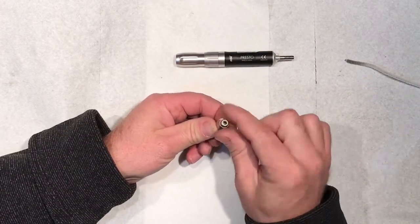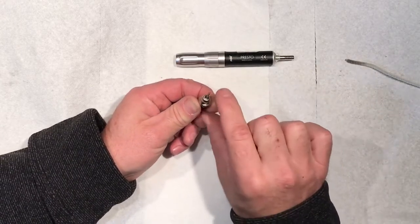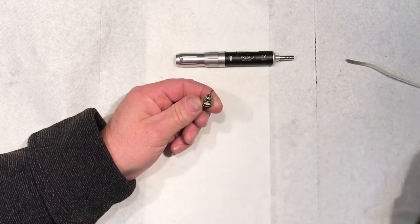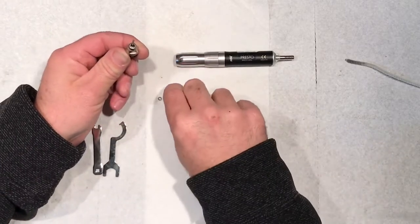We're going to get out our dummy burr that comes with the handpiece, or you can use any burr with a small head on it. Put the burr in. Next we're going to put our guide bush on, which is this little part right here.